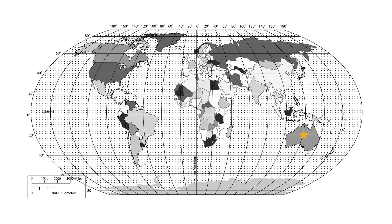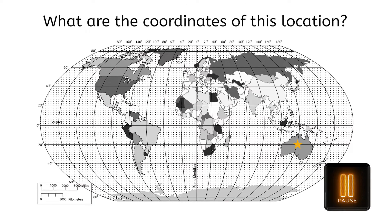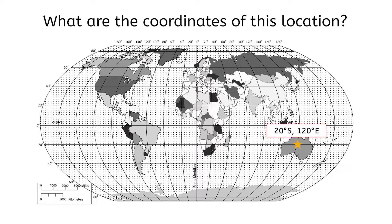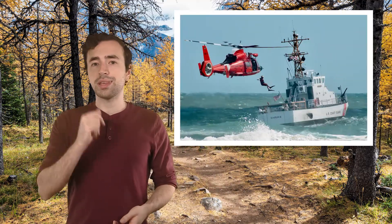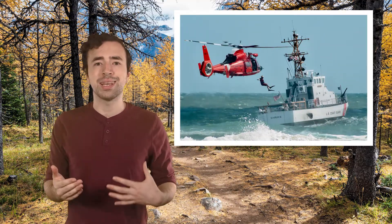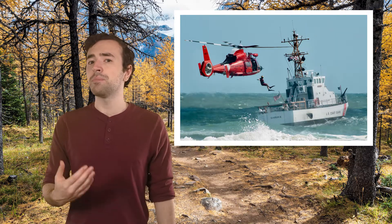Now try it backward: what are the coordinates of this starred location in Australia? If you said 20 degrees south and 120 degrees east, you're right. If these felt challenging, it's totally okay — you'll get more practice in the lesson activity. Are you wondering why we need to learn this if cell phones just do it for us? Being able to quickly identify coordinates is crucial for pilots, sailors, military personnel, and people in many other careers. Plus, this skill helps us understand how our phones instantly communicate our locations.